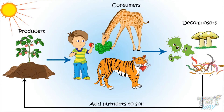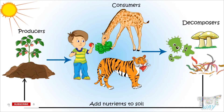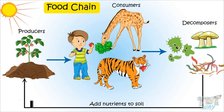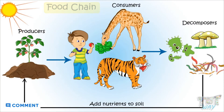Such flow of energy between producers, consumers, and decomposers is called a food chain. In a single habitat, there can be one or many food chains. Let's see examples of such food chains.